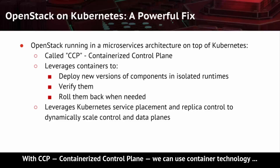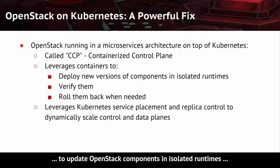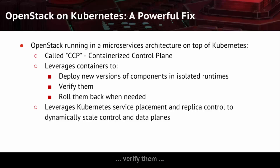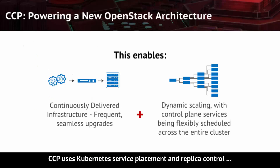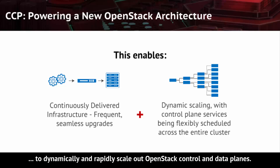With CCP, Containerized Control Plane, we can use container technology to update OpenStack components in isolated runtimes, verify them, and roll them back if needed. CCP uses Kubernetes' service placement and replica control to dynamically and rapidly scale out OpenStack control and data planes.